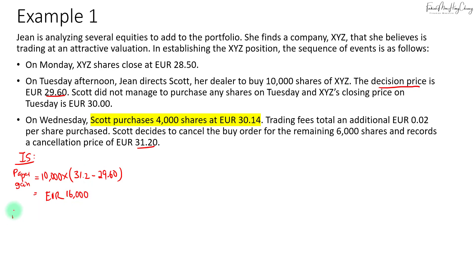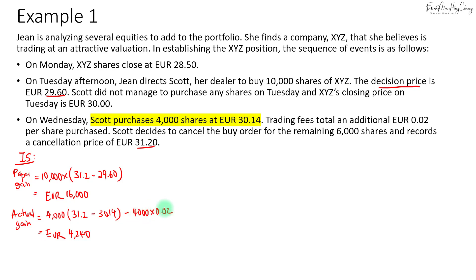The paper gain is 1.60 times 10,000, so that's 16,000 euros. When you calculate the actual gain, you only managed to buy 4,000 shares, and your gain is based on the ending price 31.20 minus the price you bought at, which is 30.14, giving a gain of 4,240 euros. Don't forget the commission of 4,000 multiplied by 2 cents each, which is 80 euros. So the overall actual gain is 4,160, and the implementation shortfall is the difference: 16,000 minus 4,160, which equals 11,840 euros.